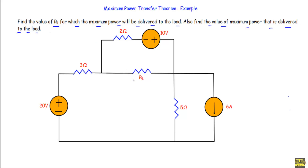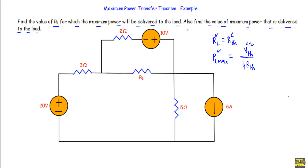We have to find the value of R_L for which it will receive maximum power, and we have to find the value of that maximum power. From the Maximum Power Transfer Theorem, we know that a load resistor R_L receives maximum power when R_L is equal to the Thevenin resistance, and the value of maximum power PL_max is equal to V_th squared over 4R_th. So if I can calculate Thevenin resistance and Thevenin voltage from the circuit, I can calculate maximum power and the value of R_L.